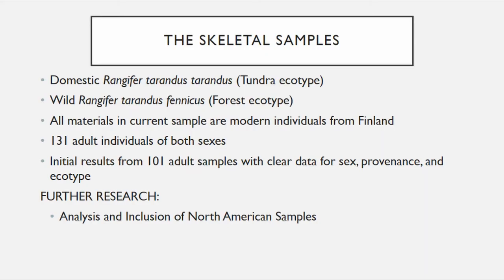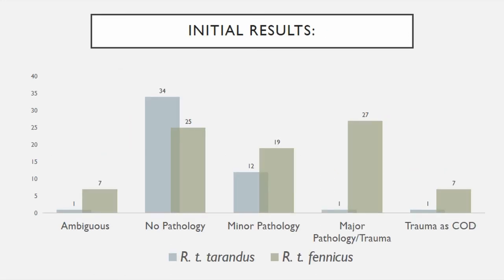So, first: pathology. The pathological sample comes from the Zoological Museum at the University of Oulu. These included both domesticated Rangifer tarandus tarandus, which is a tundra ecotype, and Rangifer tarandus fennicus, which is a forest ecotype. They are all modern individuals. We assessed 131 adult individuals of both sexes, but only ended up analyzing 101 adult samples who have the clearest data for sex, provenience, and ecotype. Additionally, I've analyzed all of the available complete or mostly complete caribou skeletons at the Canadian Museum of Nature, covering wild individuals of all three ecotypes, supplemented with additional caribou housed at Washington State University. However, the rubric used on the Finnish sample has not yet been applied to these.